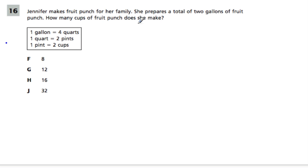In this problem we have fruit punch for family and she wants to make 2 gallons of fruit punch. So start by highlighting the important terms. 2 gallons is very important here. So how many cups is this? And so we want to go from gallons to cups. So fortunately they give us all the tools we need to do that right here.